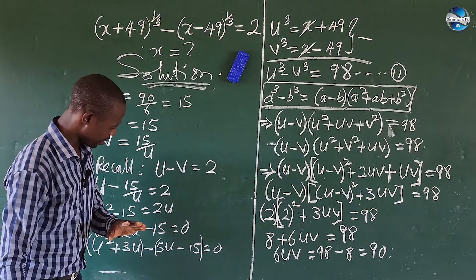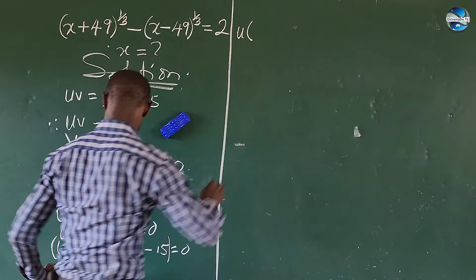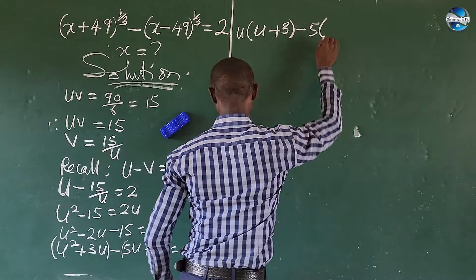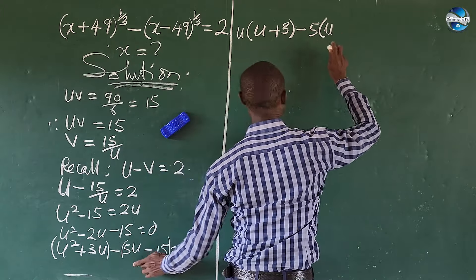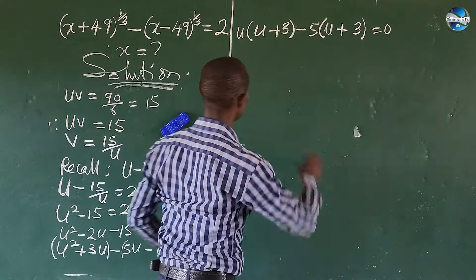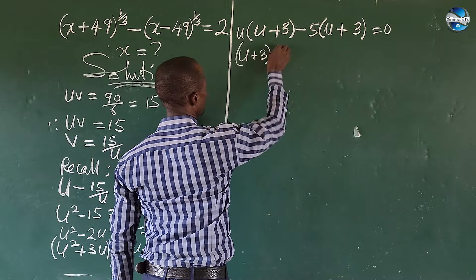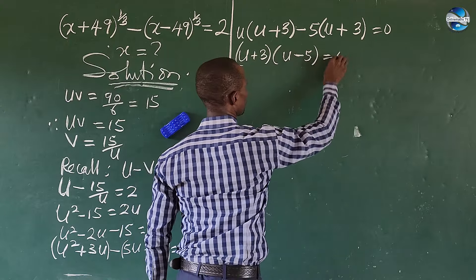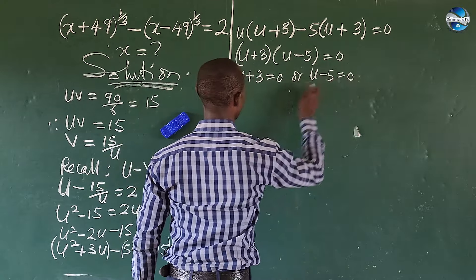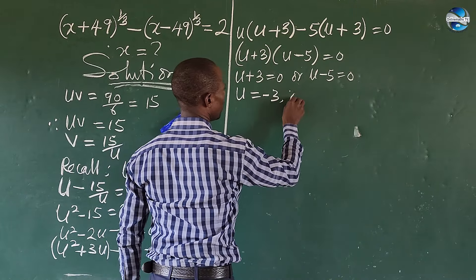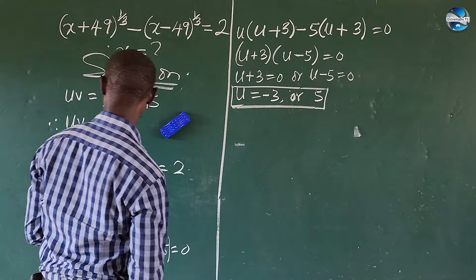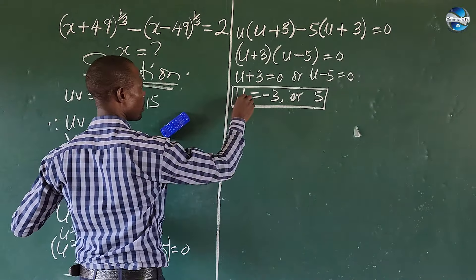Factoring: u(u + 3) − 5(u + 3) = 0, giving (u + 3)(u − 5) = 0. Setting each factor to zero: u + 3 = 0 or u − 5 = 0, so u = −3 or u = 5.